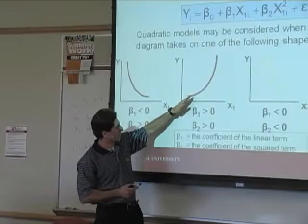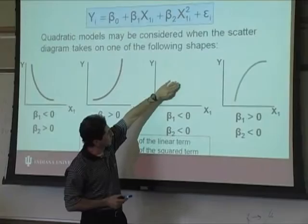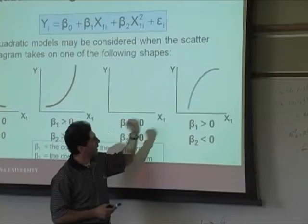Here we start with a positive linear trend, and then it becomes even more positive. In this case, we start with a negative trend and it becomes more negative when considering the quadratic term.